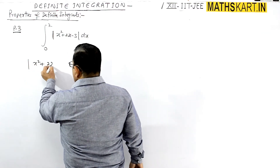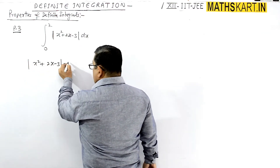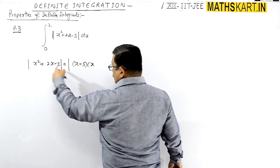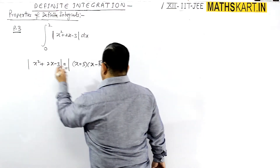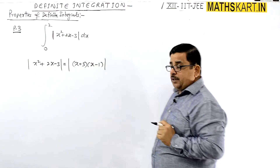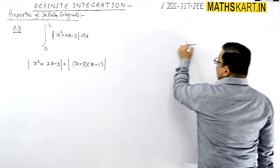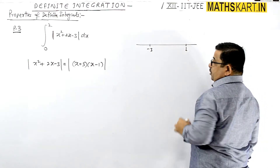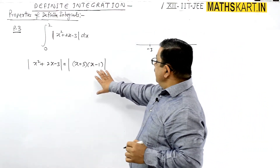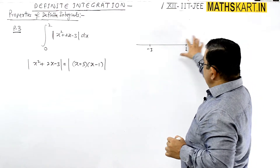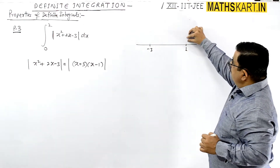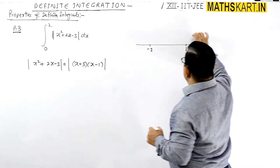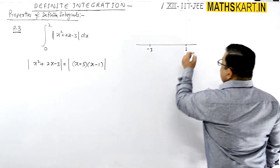x² + 2x - 3 equals (x + 3)(x - 1). So the critical points are x = -3 or x = 1. When x is greater than 1, both factors are greater than 1, so the expression gives a positive value — here it will give a positive value.